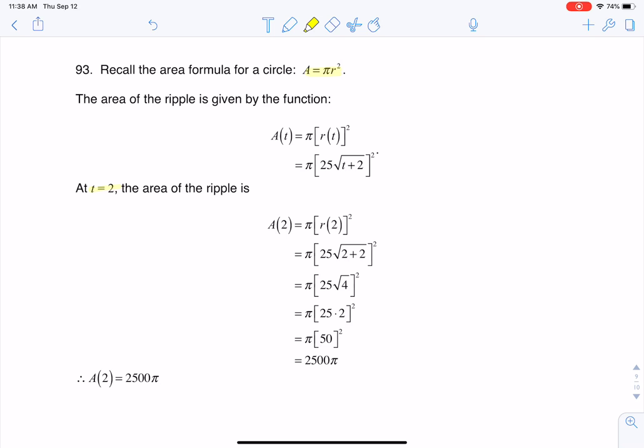All right, so we knew area was pi r squared, and they gave us r as a function of t, so they actually told us in the problem r of t. If I want to find the radius, take 25 times the square root of t plus 2.